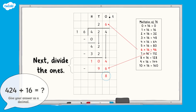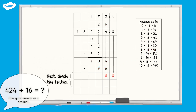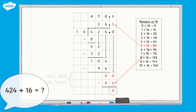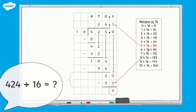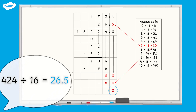The eight remaining ones are exchanged for eighty tenths. The dividend doesn't have any tenths, so we put a zero in the tenths column of the dividend, giving us eighty tenths in total. Next, divide the tenths. Eighty tenths divided by 16 equals five tenths, with zero tenths remaining. So we write a five in the tenths column of our quotient. Because we have zero remaining, our calculation is complete. Therefore, 424 divided by 16 equals 26.5.